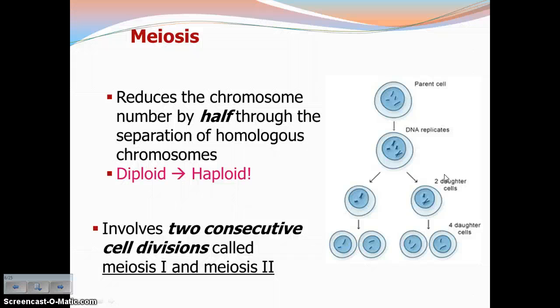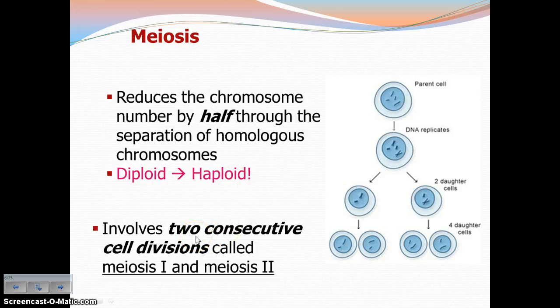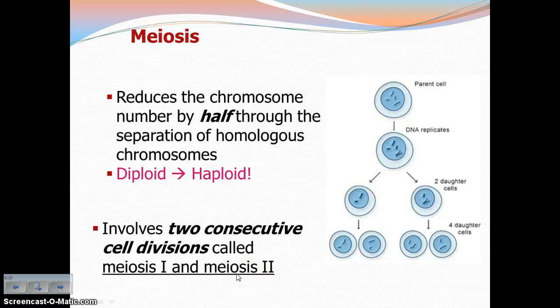So how does meiosis happen? How do we produce cells that have half the number of chromosomes? The purpose of meiosis is to reduce the chromosome number by half through the separation of homologous chromosomes. We're starting with a diploid cell and turning it into haploid cells. The only way that's going to happen is if you have two consecutive cell divisions. In mitosis we started with one cell, divided, and ended up with two cells. But in order to end up with haploid cells, we start with one cell, divide it twice, ending up with four daughter cells. So we have meiosis I, the first division, and meiosis II, the second division.